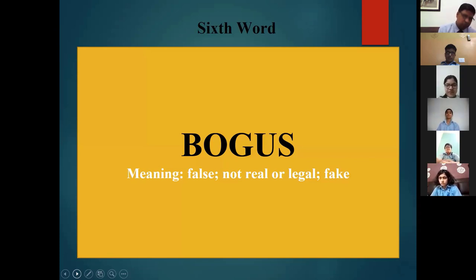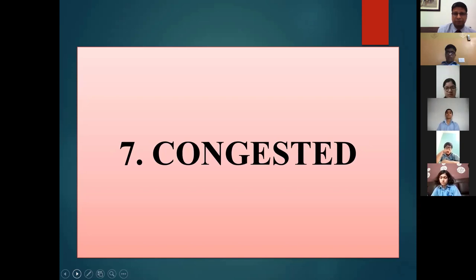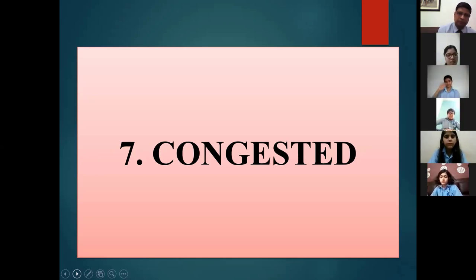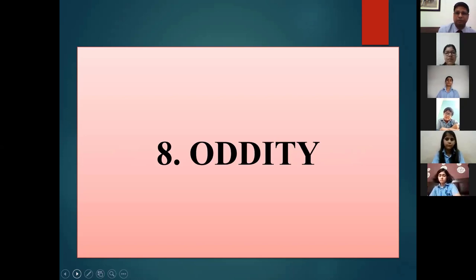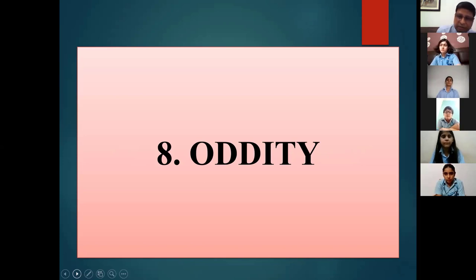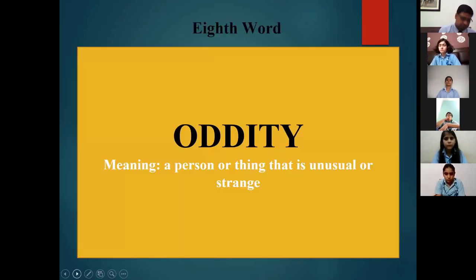Word seven goes to Neha Bhardwaj: 'Congested' — she answers 'crowded or blocked' — correct. Word eight goes to Girisha Bhajaj: 'Oddity' — he answers 'a person or thing that is unusual' — correct. The word comes from 'odd' meaning unusual, so an oddity is a person or thing unusual in nature.